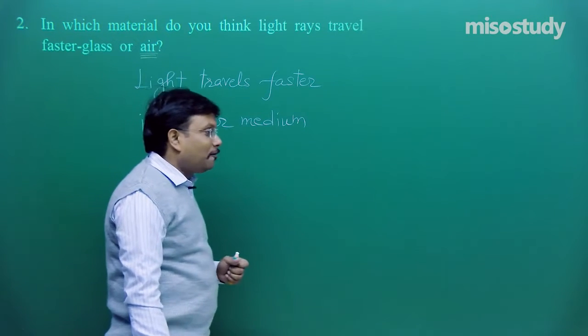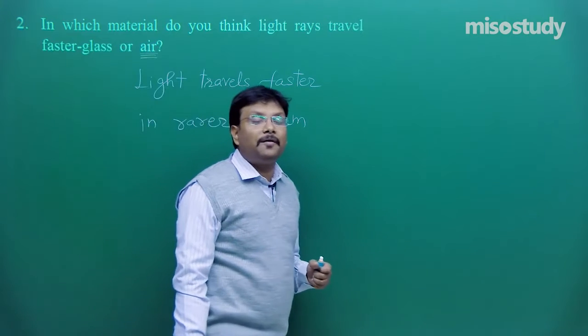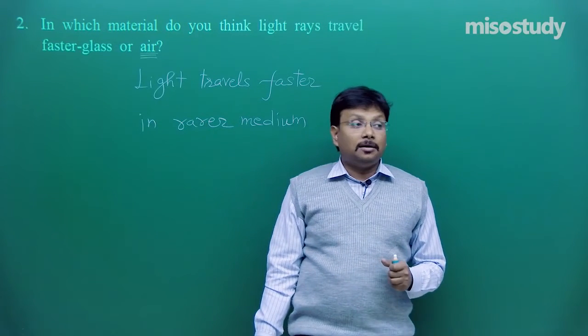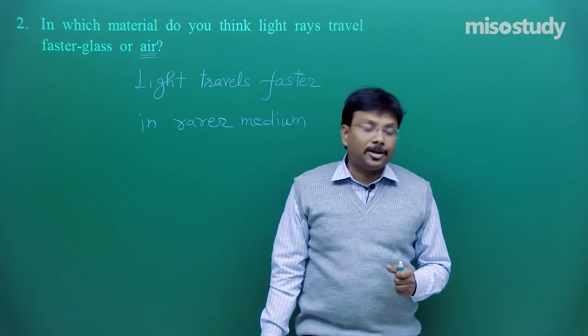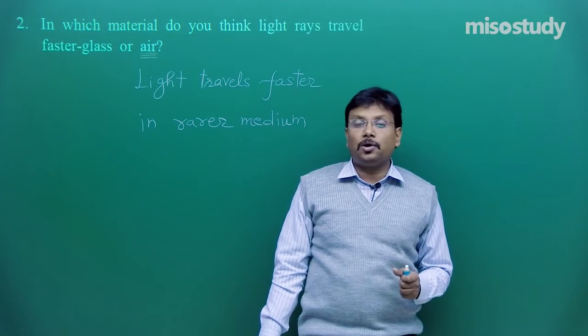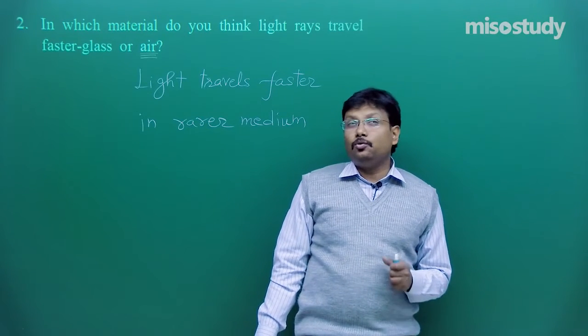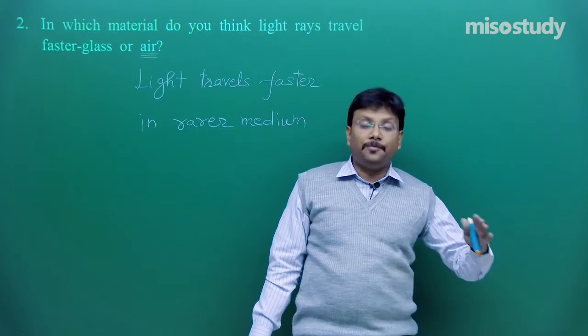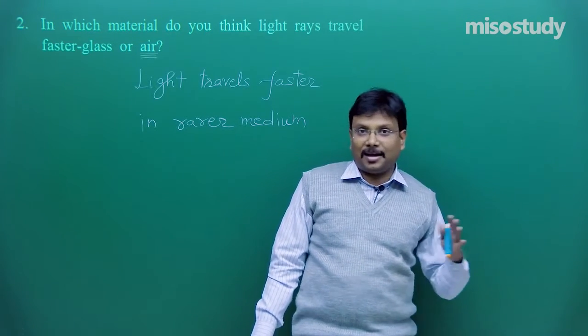Maximum velocity of light is 3 into 10 to the power 8 meter per second in vacuum. And then consider this diamond. Diamond refractive index is 2.4. So light travels around 2.4 times less speed with this 3 lakh kilometers per second.